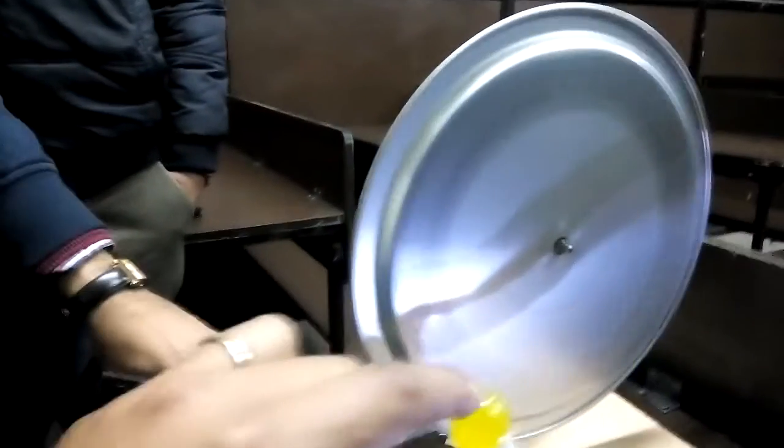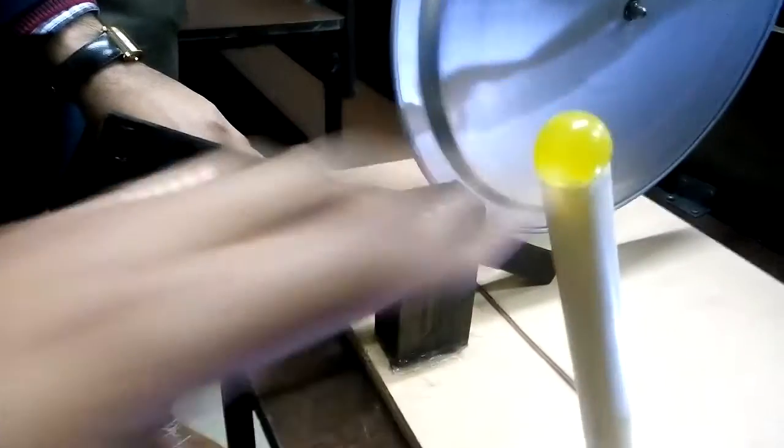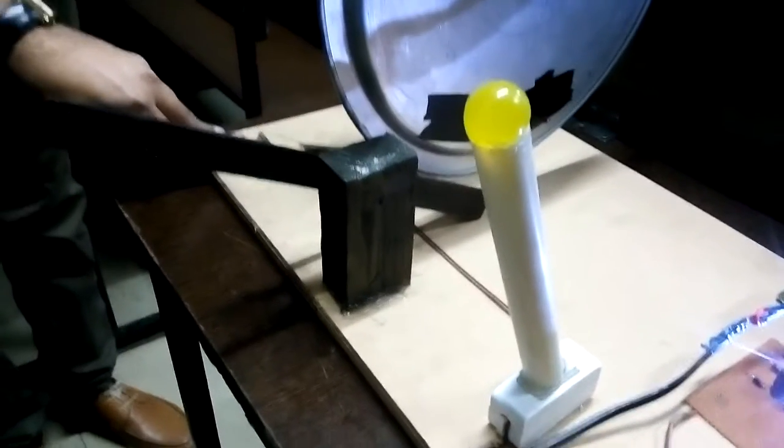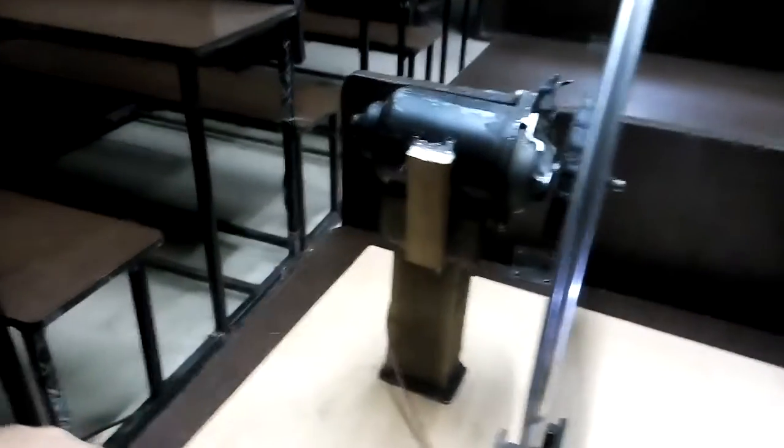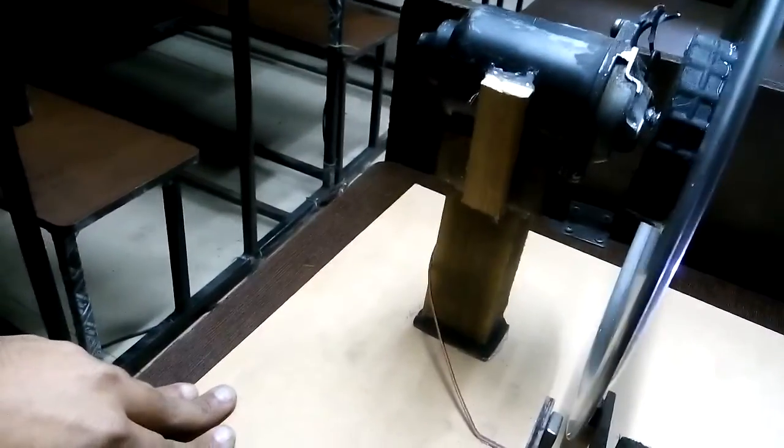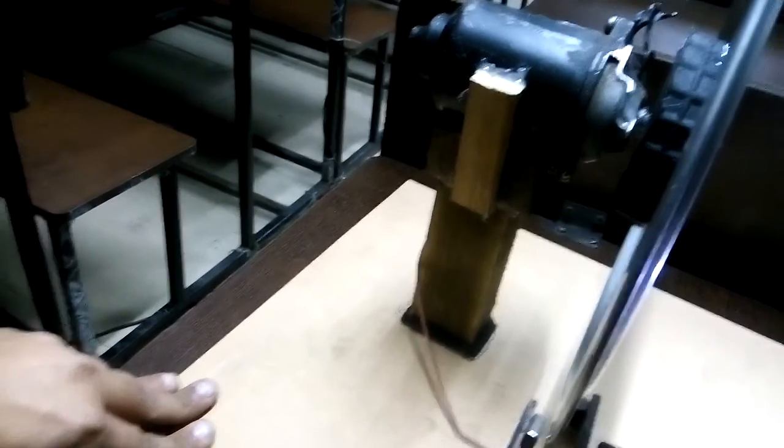When we move it in the backward direction, the current will not pass to the motor. The wheel will get disconnected, the power will get disconnected, and the motor will not move. The plate will get stopped. This is the mechanism.